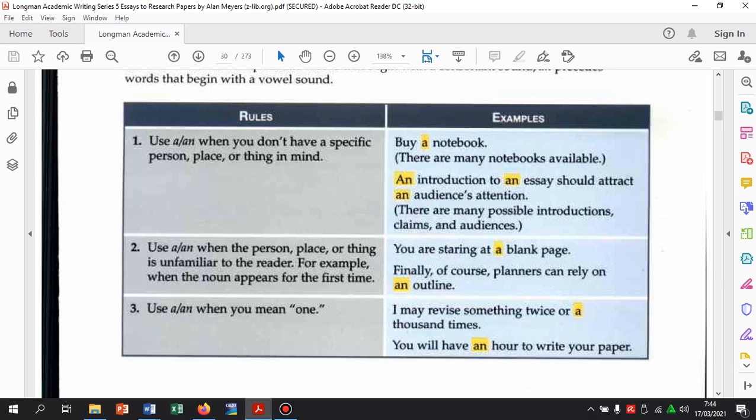Use a or an when you don't have a specific person's class or thing in mind. Jadi, kalau belum ada, gak pernah ada membahas spesifik orang atau benda atau tempat, jangan pakai the. Tapi, pakai a. Contoh. Buy a notebook. Buy a laptop. Boleh. Karena dia cuma notebook secara umum general. An introduction to an essay should attract an audience's attention. Jadi, kenapa pakai a di sini? Ini karena general, tidak spesifik satu hal saja yang dibahas. Tetapi, juga banyak hal possible introduction, possible claim, possible audiences.